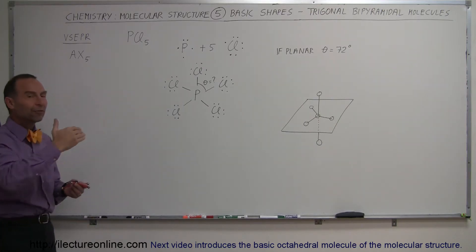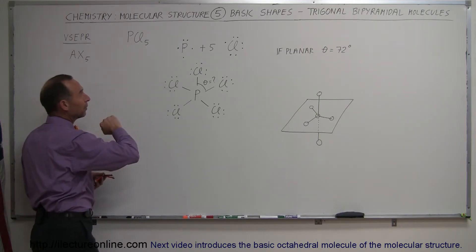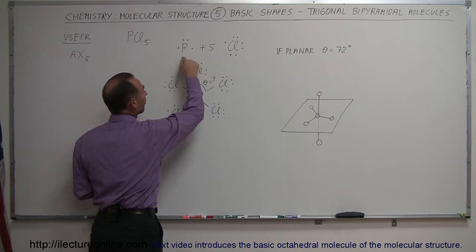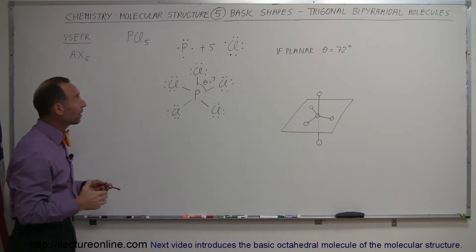Five terminal molecules at the end of five bonds. A good example of that would be phosphorus pentachloride. Notice we have one phosphorus atom, five chloride atoms. Phosphorus has five valence electrons, so it could make up to five bonds, five single bonds.